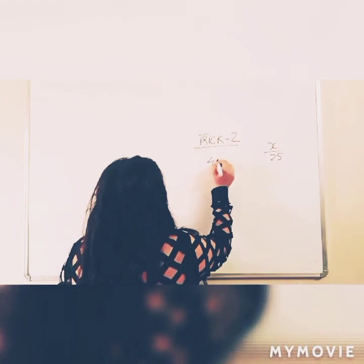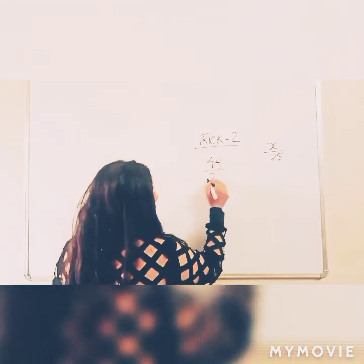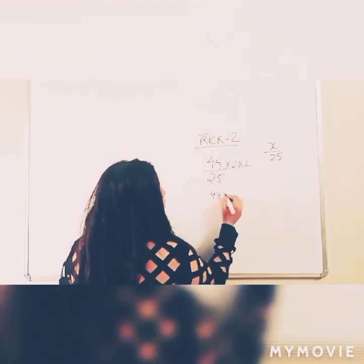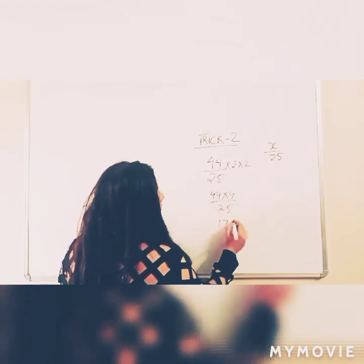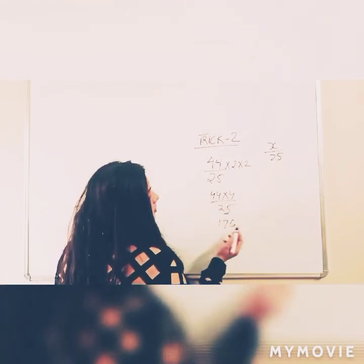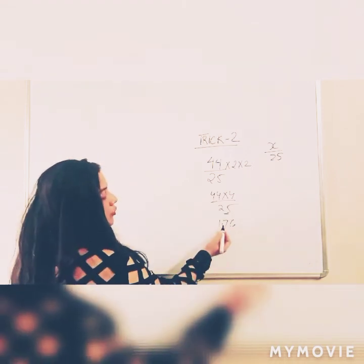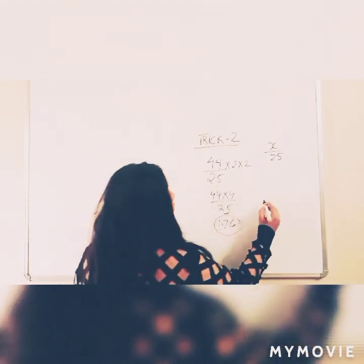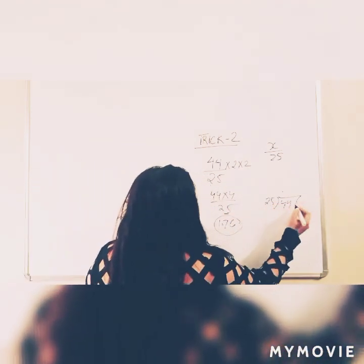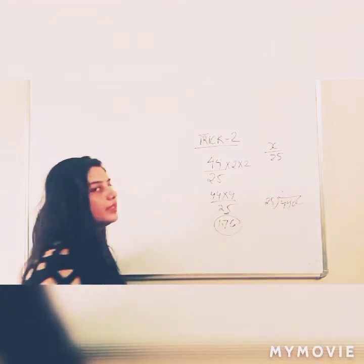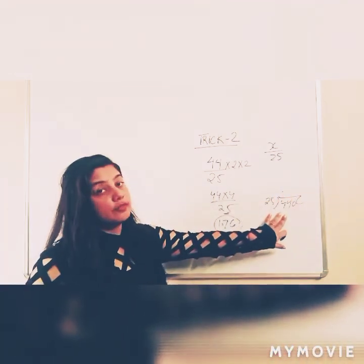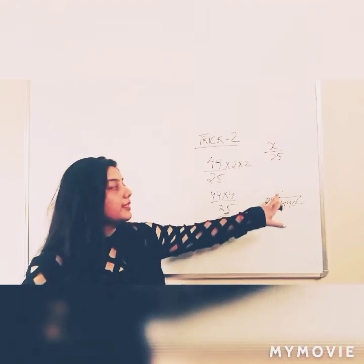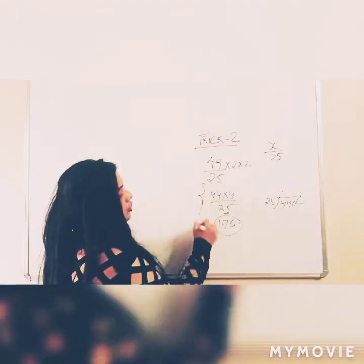Now let us use another number: 44 divided by 25. As I told you, multiply 2 into 2 — that is, 44 into 4, divided by 25. That gives 176. Now what do you see? There are 2 digits in the denominator, so you put the decimal here. The answer is 1.76. Now if you solve it by the traditional method, you'll see it takes a very long time, and there are more chances of making a mistake — subtracting wrong, adding wrong, or placing the decimal wrong. So why do that when you simply have a short trick?